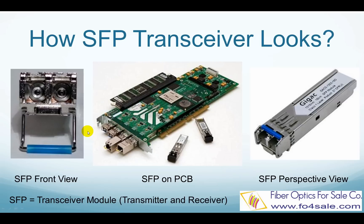In this slide, it shows a typical SFP transceiver in different views. The first picture is the front view, which shows the SFP module has two ports. One port has a laser — that is the transmitter side. The other port has a photodetector, which is the receiver side. So basically, SFP is a transceiver module, since it has a transmitter and receiver in a single unit.